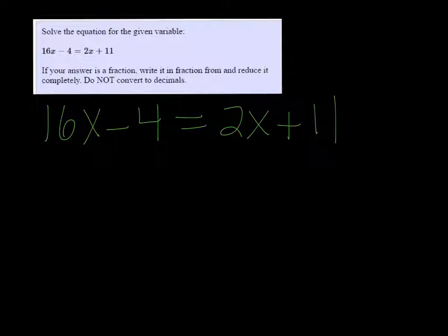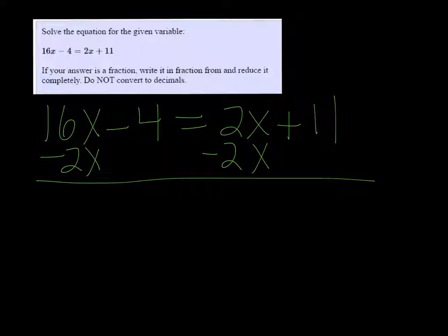Since I have variables on both sides of the equation, I'm going to subtract 2x on both sides so that I only have a variable on one side of the equation. So I have 14x minus 4 equals 11.